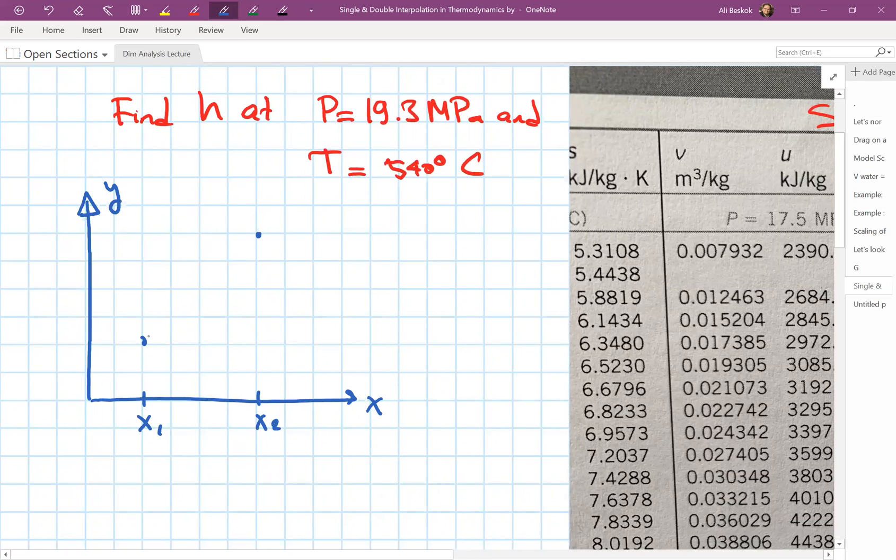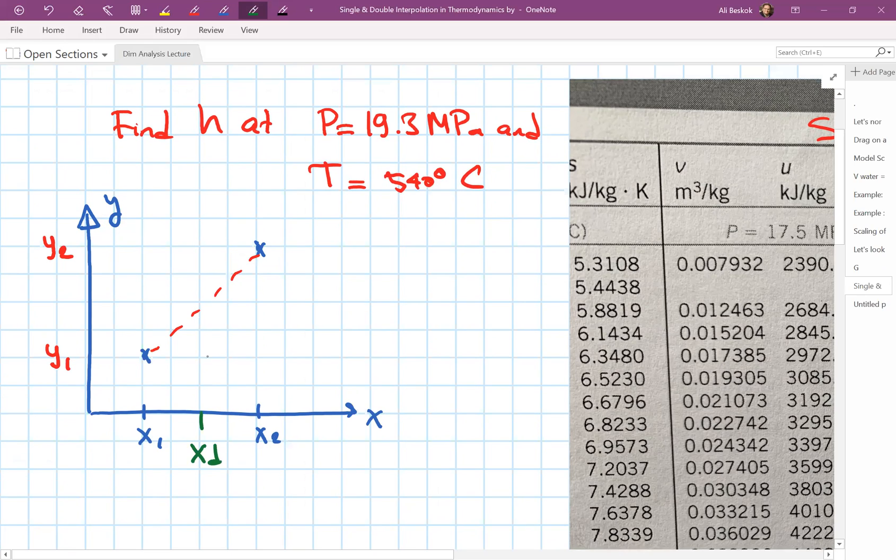Let's assume there's some sort of variation here. The property basically changes from here to here. For every x value, there's a corresponding y value. Let's write this as y1 and here is y2. Obviously, the property may be changing linearly between these two points, and we'd like to figure out a property at the desired value, x sub d, the desired value.